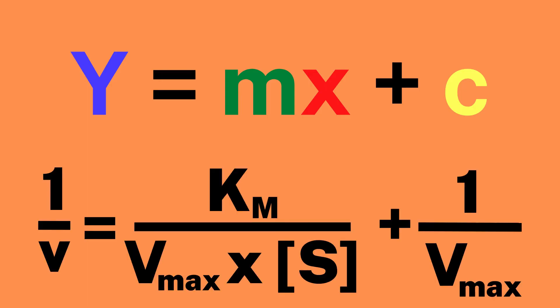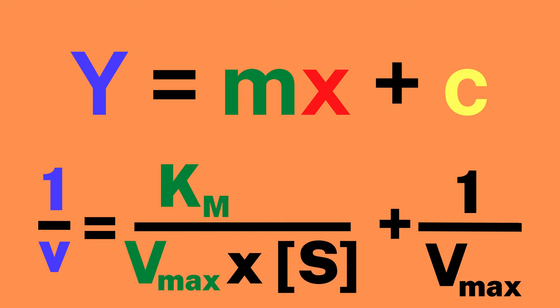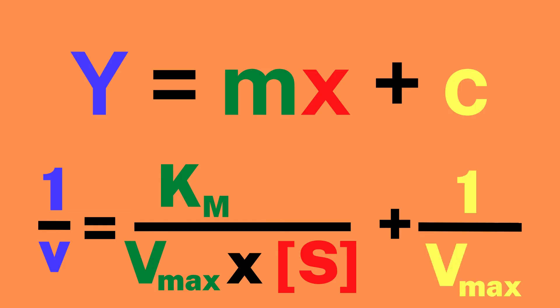We can match the components of the new equation to those of the general equation of a straight line. In other words, 1 over v will be the y part, Km over Vmax will be the m part, 1 over [S] will be the x part, and 1 over Vmax will be the c part.